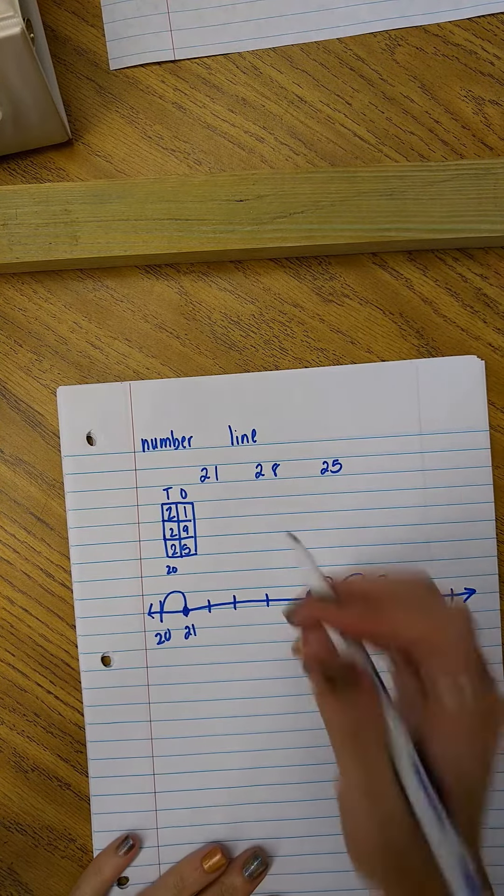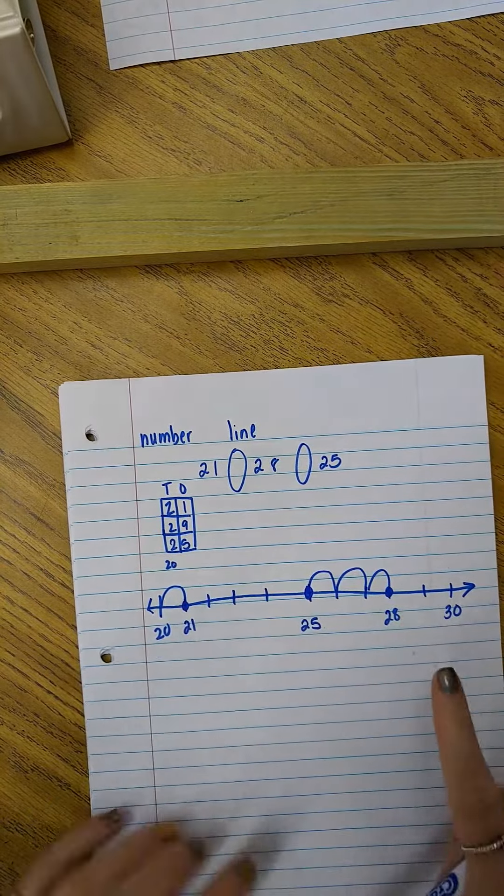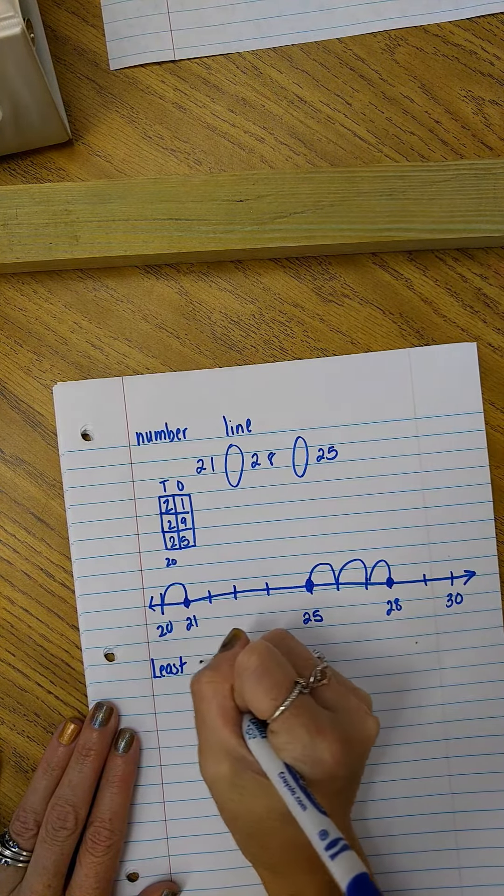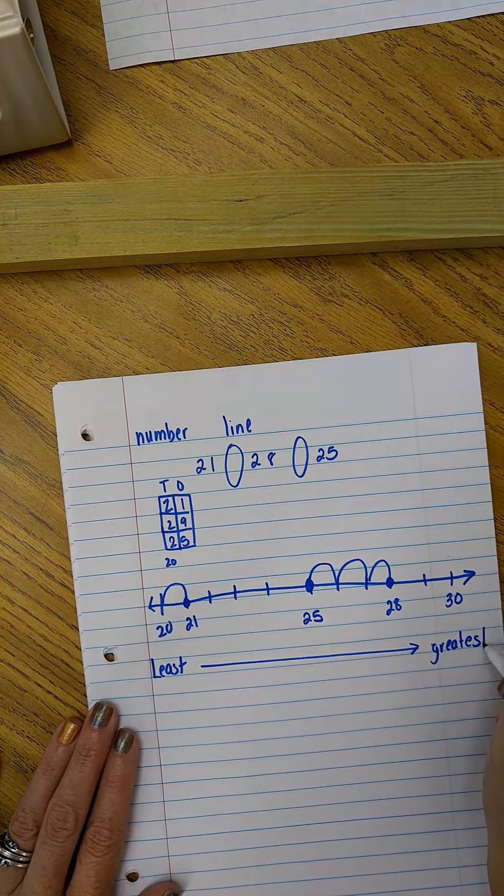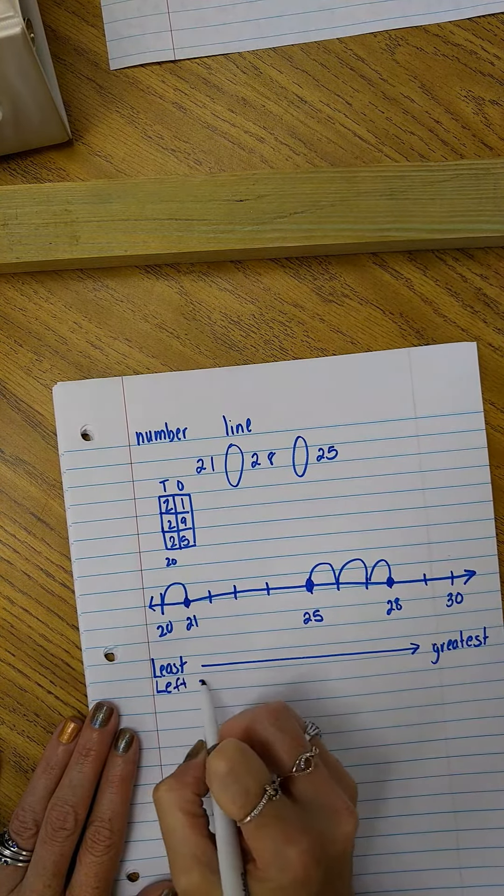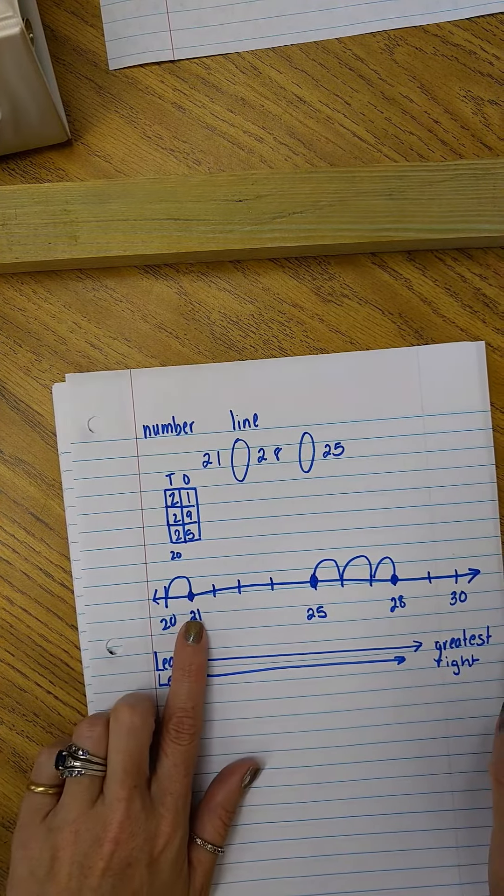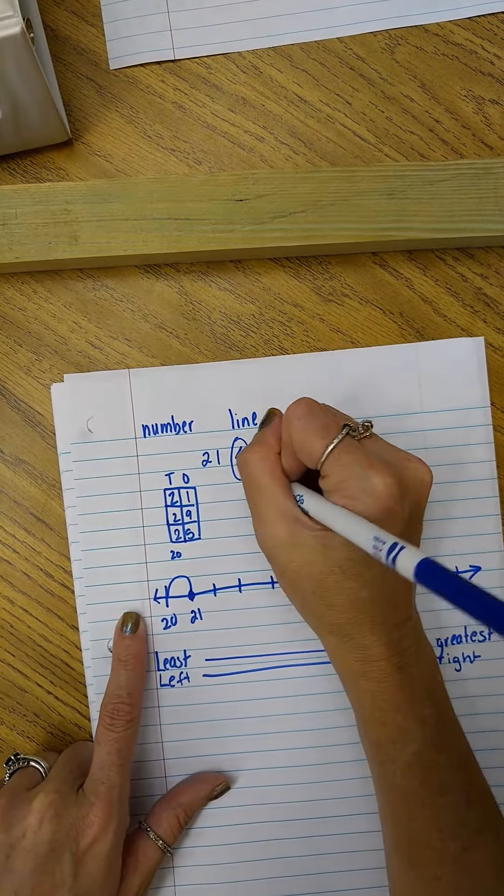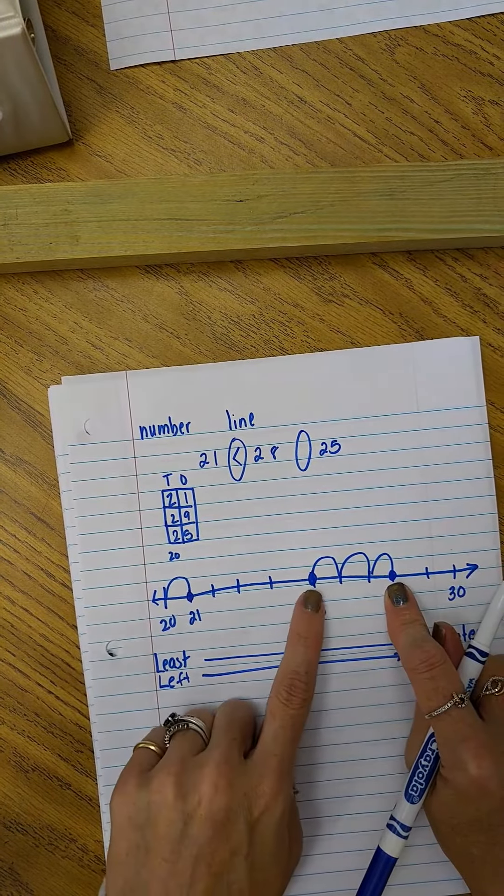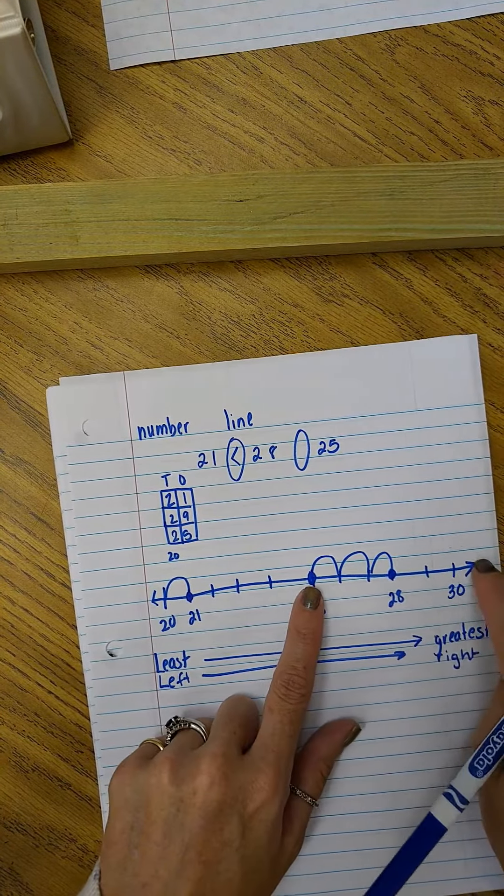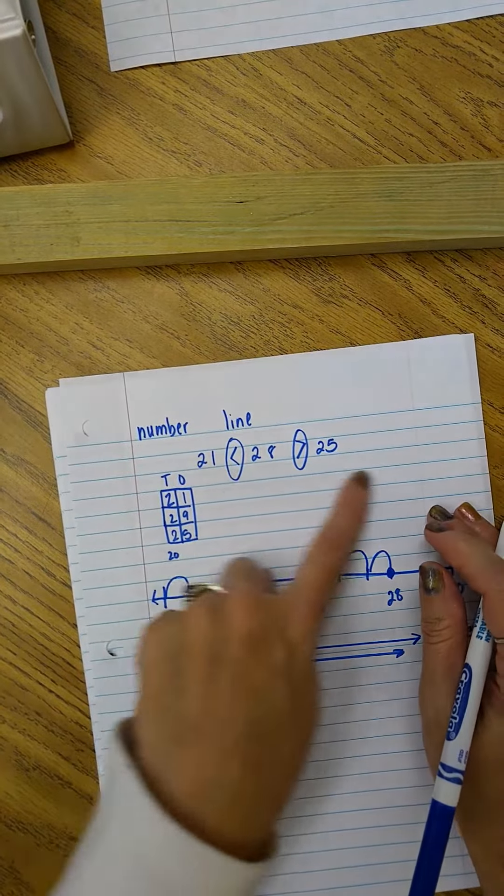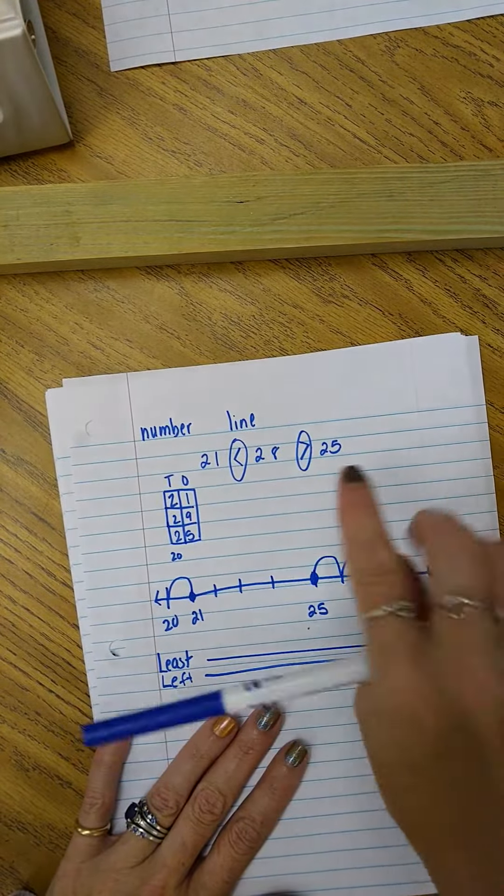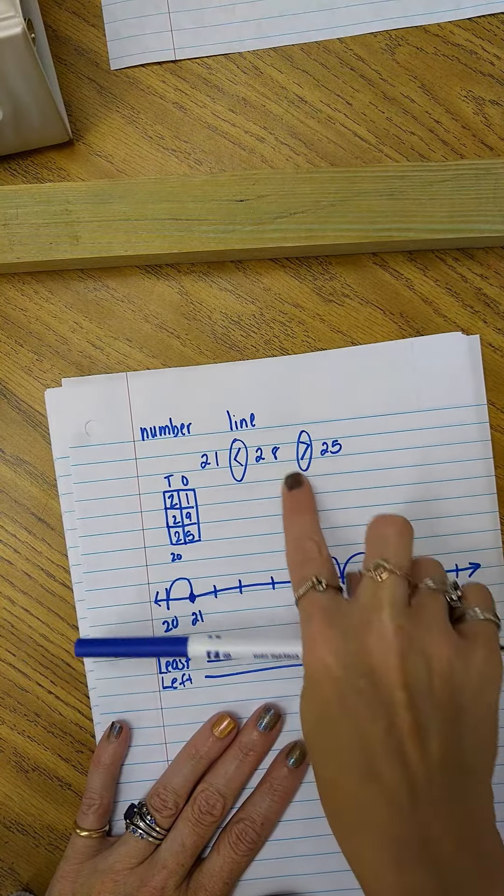Now I can compare these numbers. 21 and 28. Well, number lines work from left to right. So from left to right is least to greatest. That's how number lines work. Left to right. So 21 and 28. Well, 21 is closer to my left. So 21 is less than 28. And then here's 28 and here's 25. So 28 is closer to the right, so it is greater than. This is how you compare three numbers. You compare these two first, and then you compare these two. If they're written like this, you have to compare them to the number to the right and left of the symbol space.